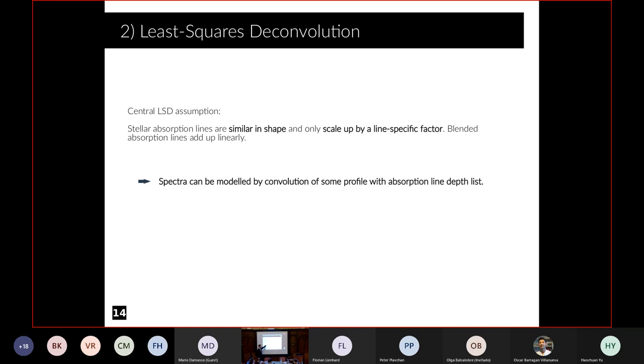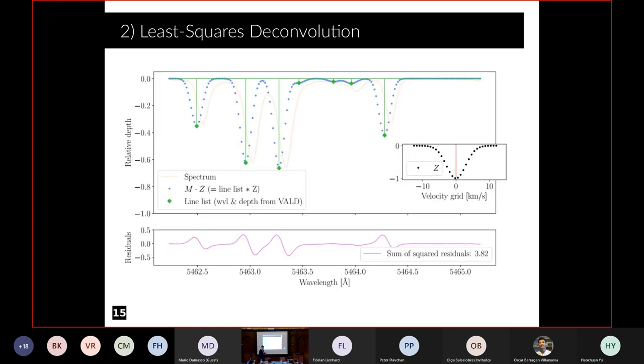In total, we model a spectrum by convolving one profile with a line list. Here's an example of how this works. We have a spectrum in orange. Then we have the position of the wavelengths of the absorption lines and their depth from the VALD database. You just enter effective temperature and so on, and you get a list with wavelength, depth, and other parameters. Now if you convolve this line list with the common profile in black, which I assumed to be centered at zero, then you get the modeling loop. That is off now because the star moves relative to the observer.